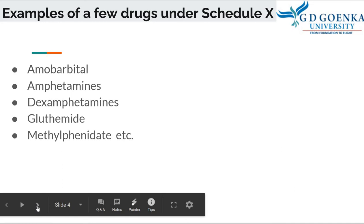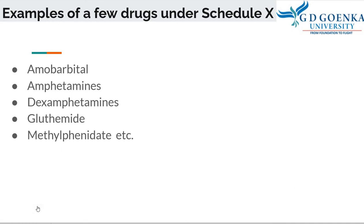A few examples of drugs under Schedule X include Amobarbital, Amphetamines, Dexamphetamines, Gluthamide, Methylphenidate, etc. There are other drugs included in Schedule X as well. They are habit-forming drugs, and most — in fact all — of the narcotic and psychotropic drugs are included in Schedule X.